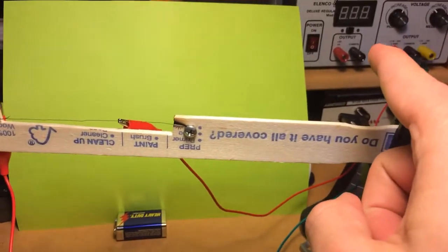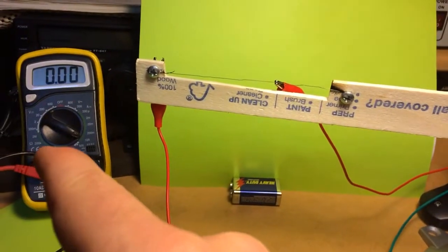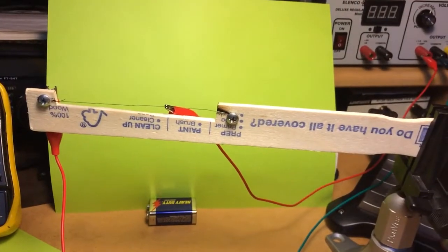I have it coming from my power supply over here, coming into the nichrome wire through the multimeter here that I'm measuring the current usage, and then back to the power supply.